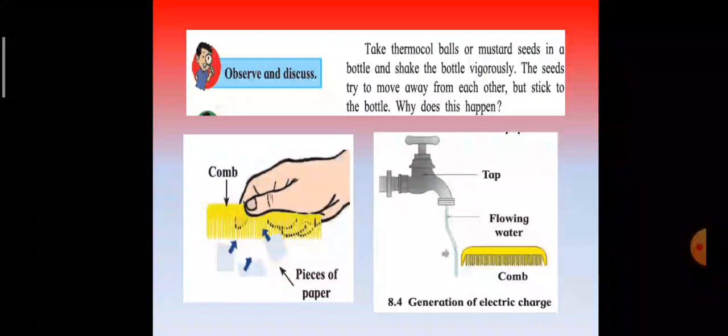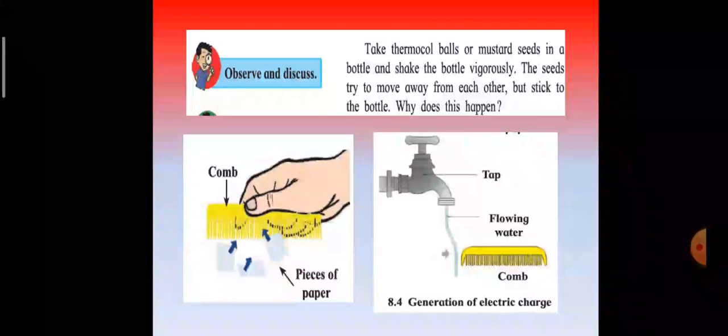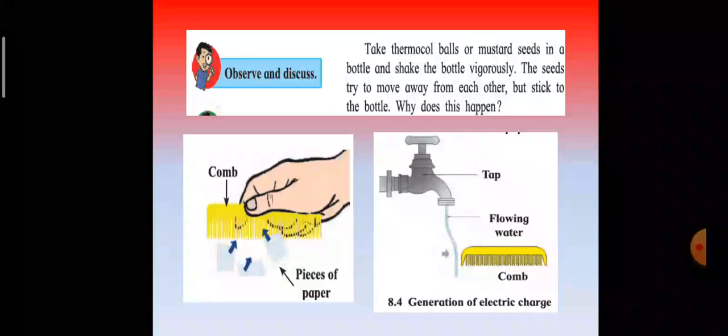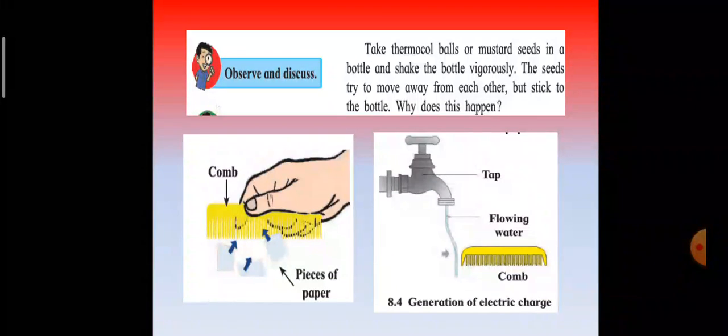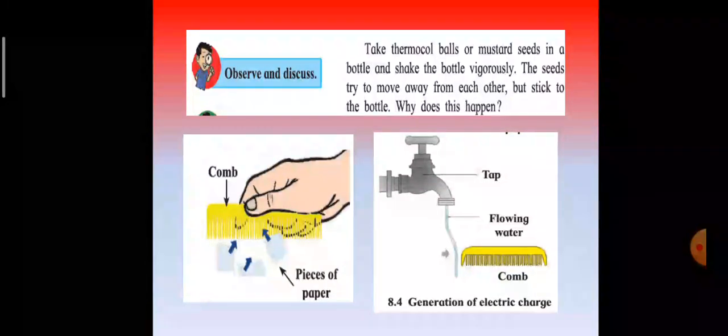When the comb is taken away, the negative particles in the flowing water come back to their original position and positive and negative charges become equal in number. As a result, the water becomes uncharged again and stops getting attracted to the comb.